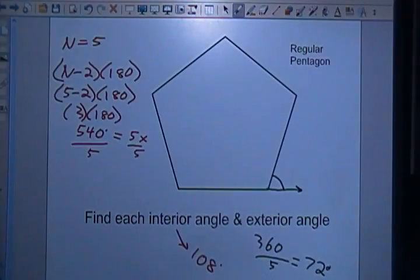Now one thing that you should notice here is 72 and 108 are supplementary, and that will be the case in all of these problems. Okay, 108 and 72 - whenever we talk about regular shapes, the interior angles and the exterior angles will be supplementary.